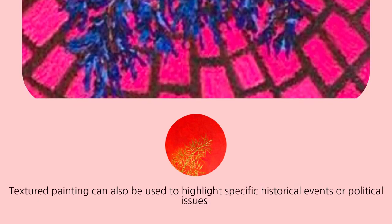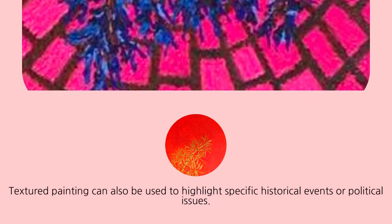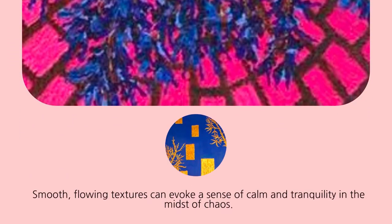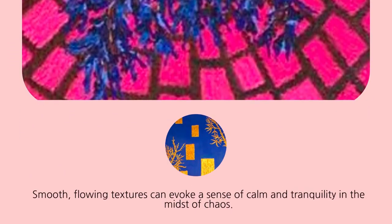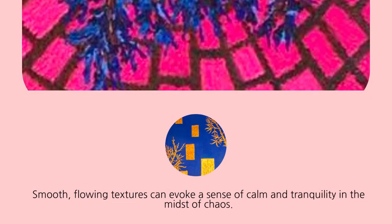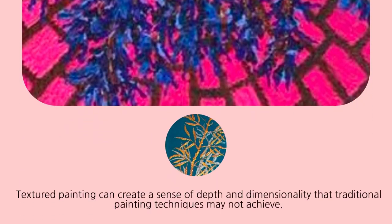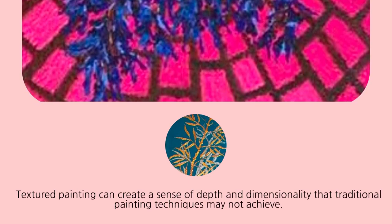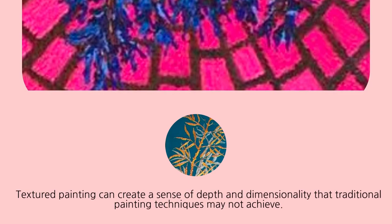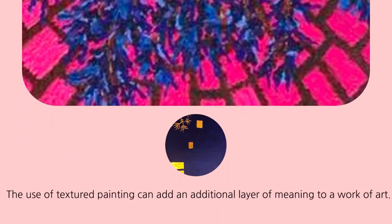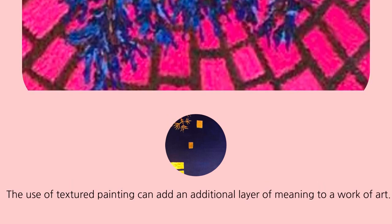Textured painting can also be used to highlight specific historical events or political issues. Smooth flowing textures can evoke a sense of calm and tranquility in the midst of chaos. Textured paintings can create a sense of depth and dimensionality that traditional painting techniques may not achieve, adding an additional layer of meaning to a work of art, especially with political issues.